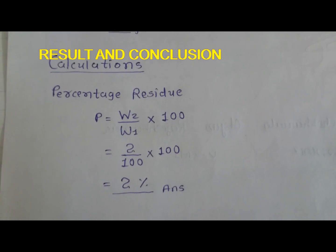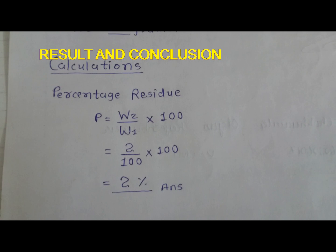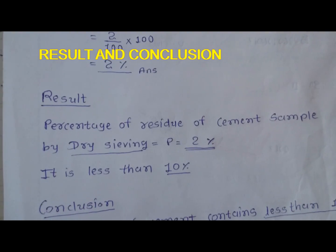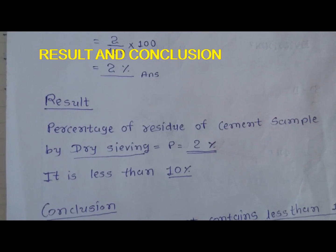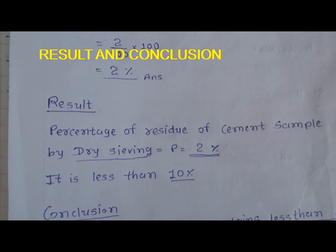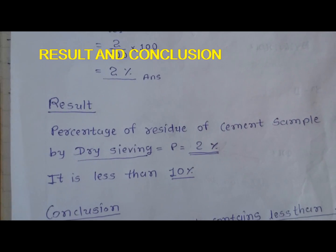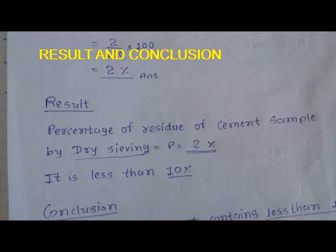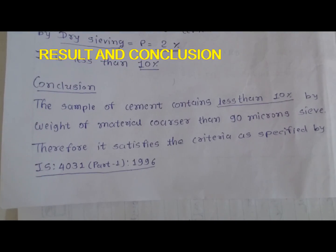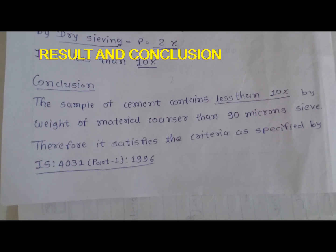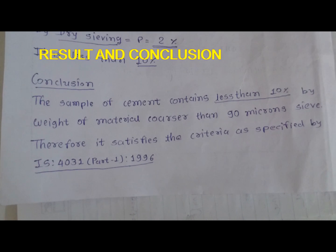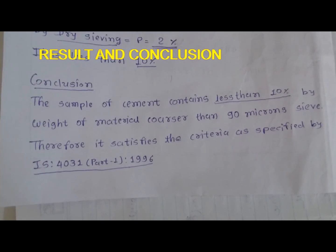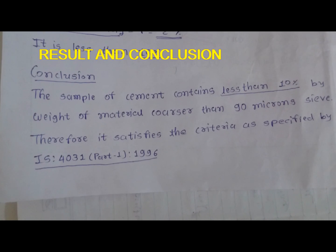The result is 2 percentage. Percentage of residue of cement sample by dry sieving P is equal to 2%, which is less than 10%. Conclusion: the sample of cement contains less than 10% by weight of material coarser than 90 micron sieve. Therefore it satisfies the criteria as specified by IS 4031 part 1 1996. Thank you for watching my video.